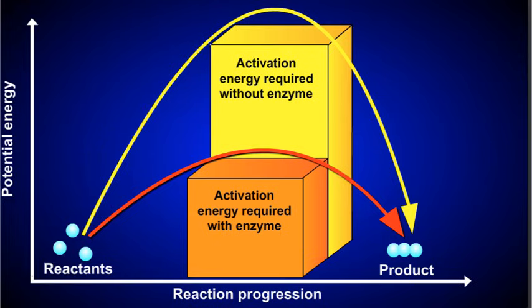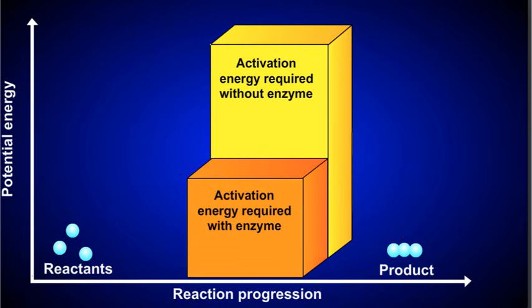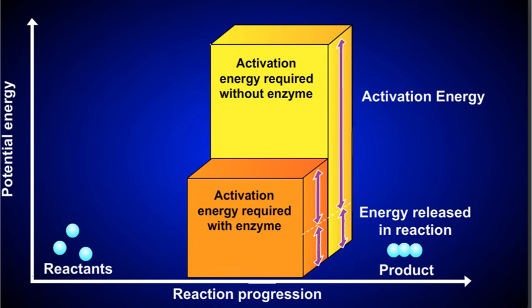The yellow speed bump represents a chemical reaction without an enzyme, and the orange speed bump represents the same reaction with an enzyme. As you can see, the orange speed bump is a lot lower. This is because the enzyme acts to physically bring the reactants together, increasing the efficiency of the reaction and lowering the amount of energy needed. Since less energy is required, the reaction occurs at a faster rate. Notice that the enzyme does not influence the energy level of the reactants or the products, but only the amount of energy required during the process of the chemical reaction.